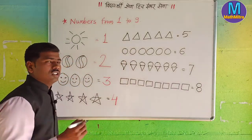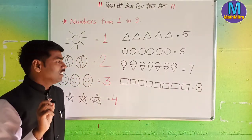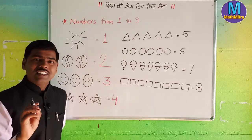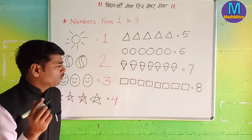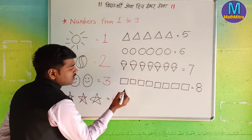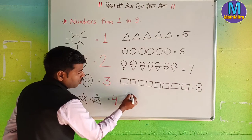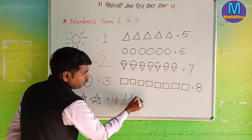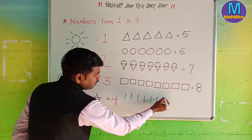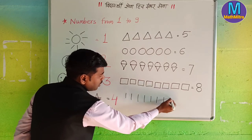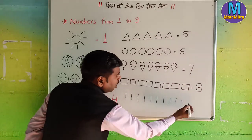Now the next one is the last — the last is nine. How do you write nine? Very simple — just standing line: one, two, three, four, five, six, seven, eight, and this one is nine. How do you write it? This is nine.